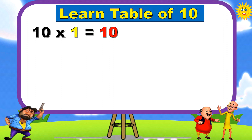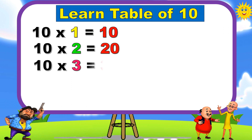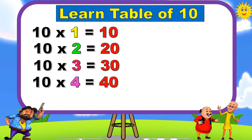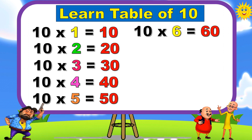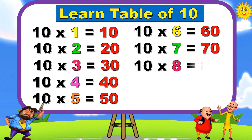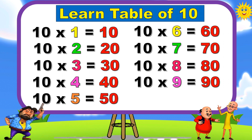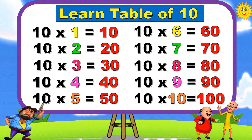Ten one's a ten. Ten two's a twenty. Ten three's a thirty. Ten four's a forty. Ten five's a fifty. Ten six's a sixty. Ten seven's a seventy. Ten eight's a eighty. Ten nine's a ninety. Ten ten's a hundred.